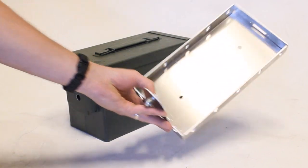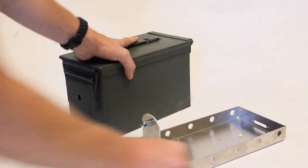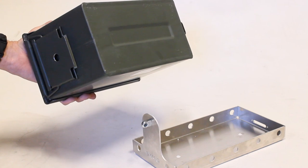This aluminum mount has a couple of key features, first of which being there's two holes in the bottom. These holes coincide with the recessed cavity here on the bottom of this 50 millimeter ammo can.